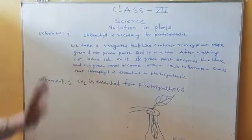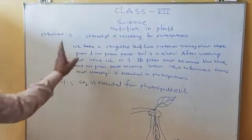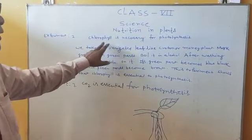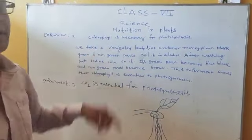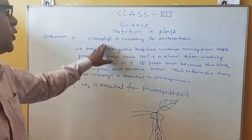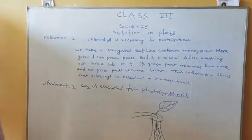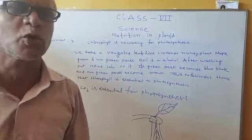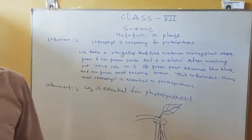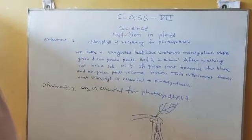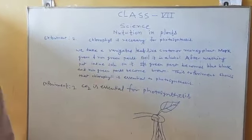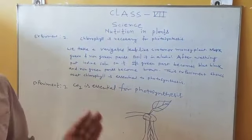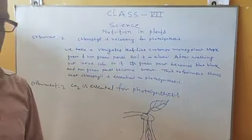Now I shall teach you the second experiment. The second experiment is: chlorophyll is necessary for photosynthesis. How can you show that chlorophyll is necessary for photosynthesis? For this experiment, we take a variegated leaf.